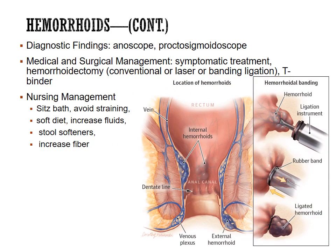Surgically, if hemorrhoids are severe enough, a hemorrhoidectomy can be performed with conventional surgery. Most commonly, banding ligation is used: a scope is introduced into the rectum, and a vacuum device sucks the hemorrhoid up, then rubber bands are popped off to ligate it. The ligated hemorrhoid will fall off in about a week.